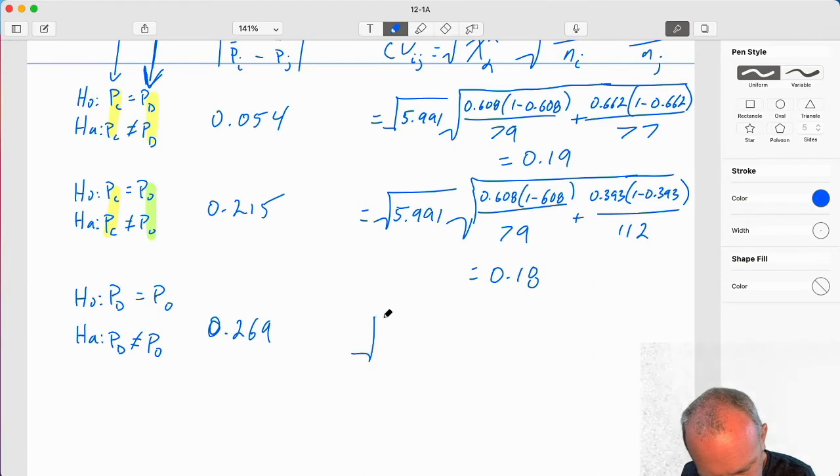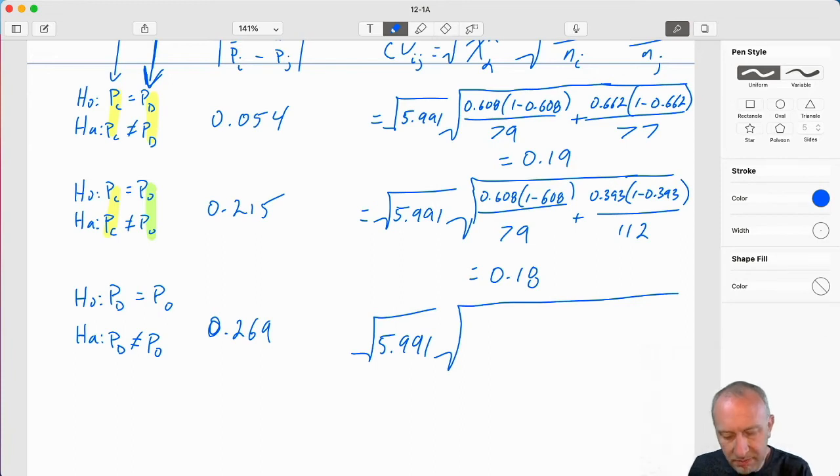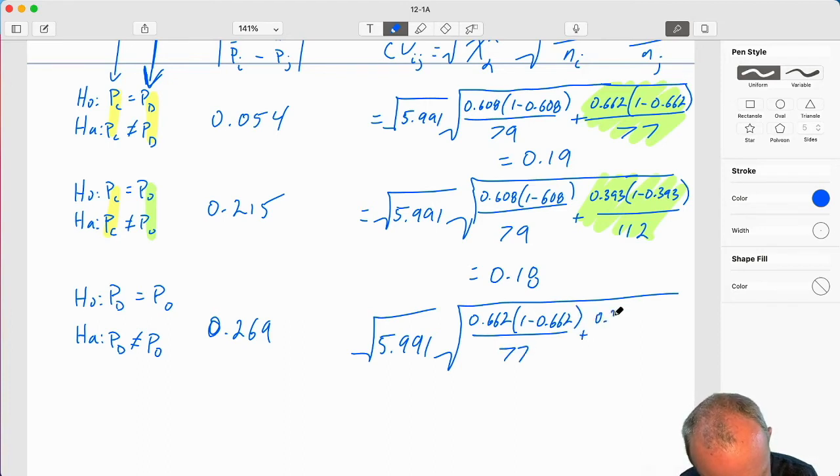Last but not least, 5.991. And now, I'm comparing dog and other. I need this information here, the relevant information for dog owners, and this information here, the relevant information for the other pet owners. I'll copy these down. 0.662, one minus, over 77. And this one is going to be very close. This is 0.17.